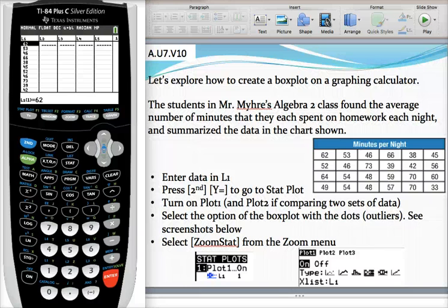Let's take a look at how to create a box and whisker plot using our graphing calculator. So right here I have some data. These are the number of minutes that a group of students took to complete a homework assignment. And I want to use that data and then analyze it using a box and whisker plot.